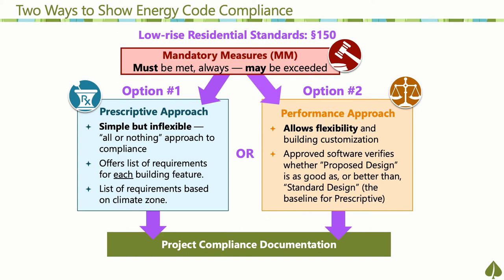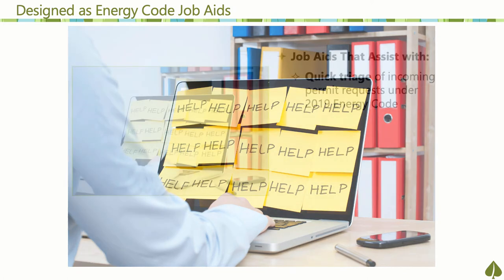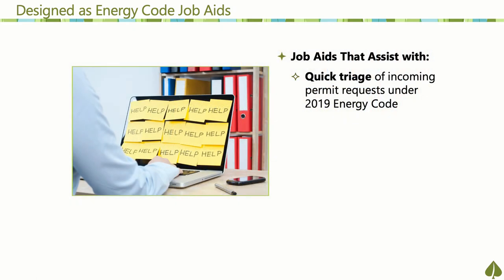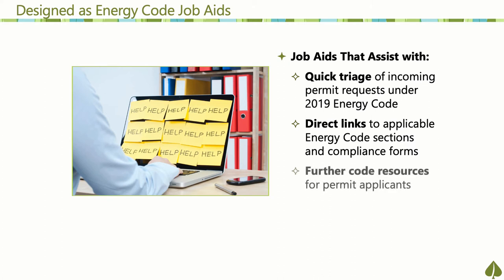Because the average homeowner will likely opt for the simplest and least costly approach, your checklists are designed to focus on permit applications submitted under the prescriptive approach. Think of the permit technician checklists as a job aid designed for your use in intake and evaluating permit applications for compliance with 2019 energy code. As a job aid, they assist you with quick triage of incoming permit requests, direct links to applicable energy code sections and compliance forms, and further resources for permit applicants to understand code requirements.